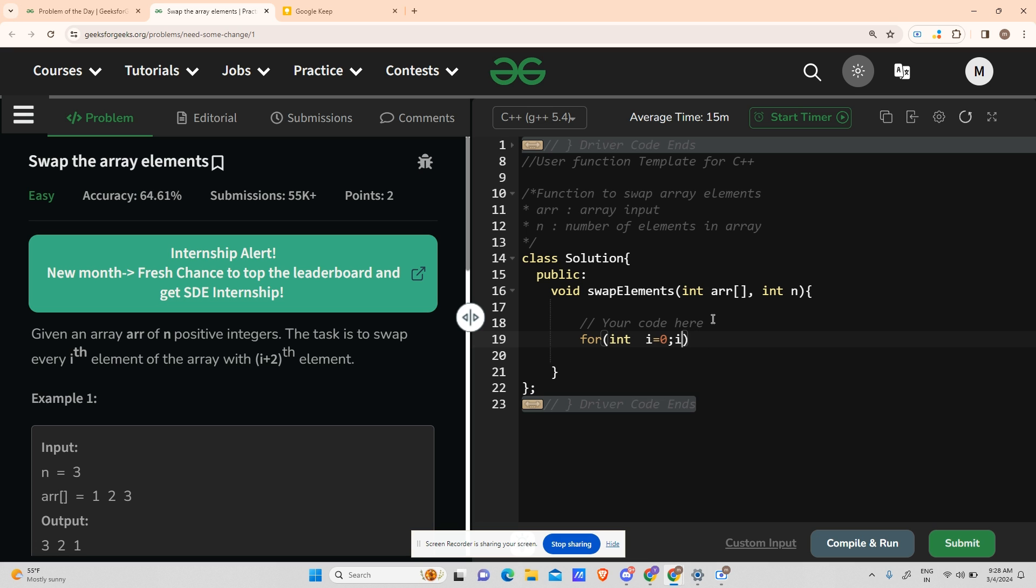For i going from 0 till i+2 is less than n, i++, we have to swap the value of arr[i] with arr[i+2]. And then return. This should work fine. Let's try to compile it.